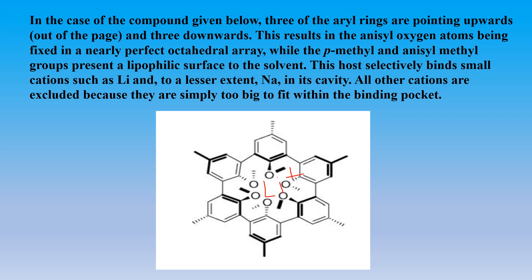The lithium ion can easily be accommodated or bind inside this octahedral array. To a lesser extent, sodium can also be accommodated inside the cavity, but all other cations cannot be accommodated because the cavity is very small. This structure is an example of a spherand — you can see it has six oxygen atoms in a perfect octahedral array.